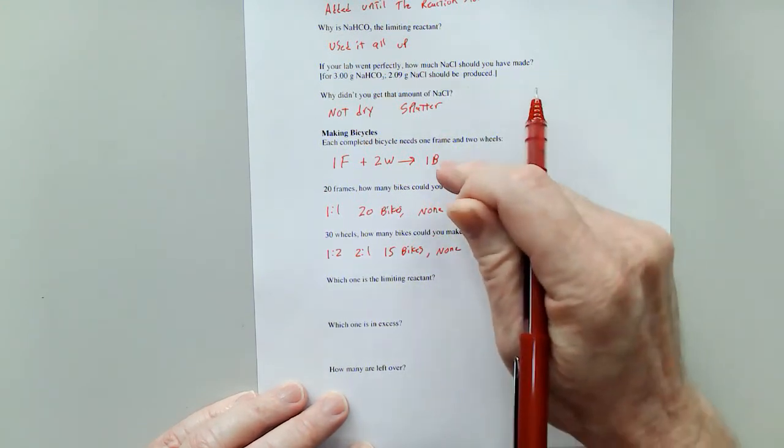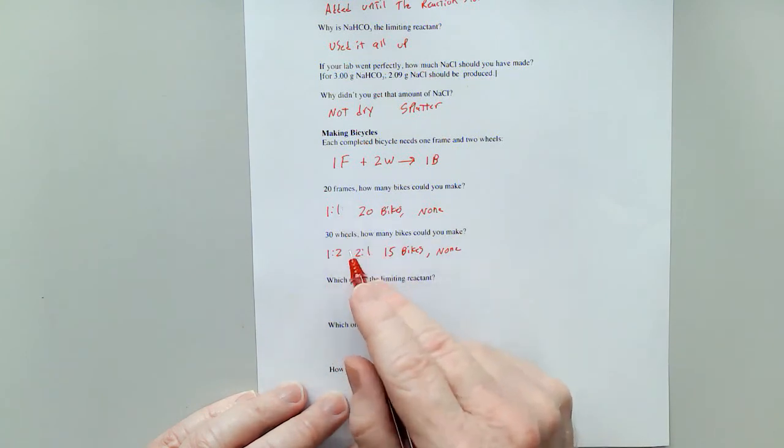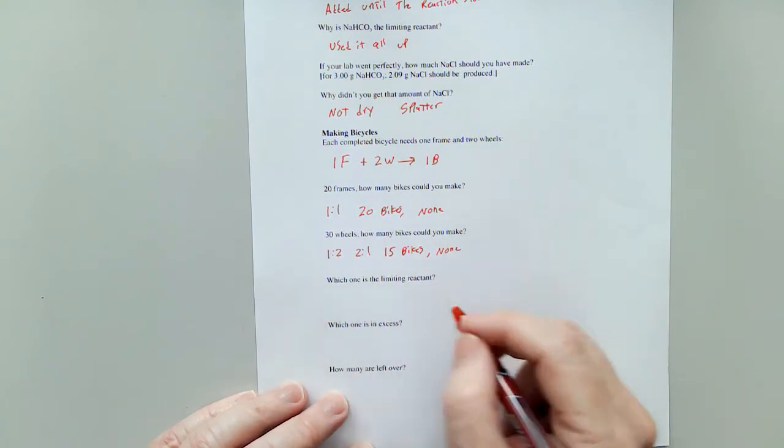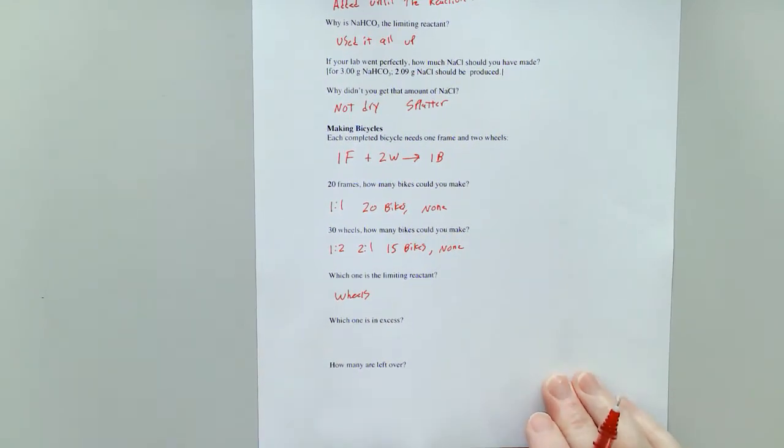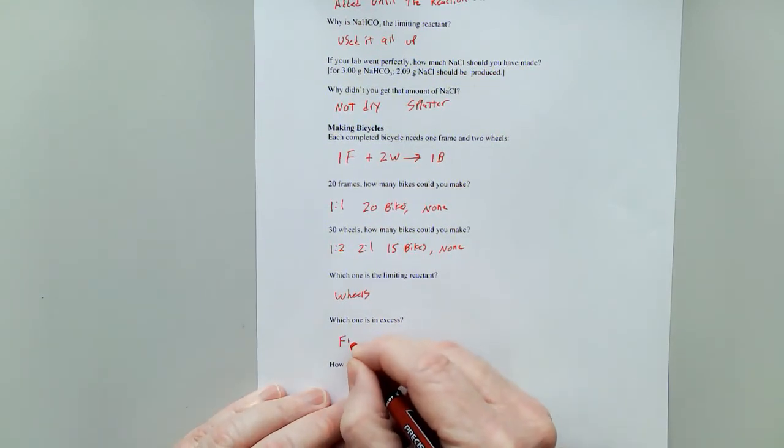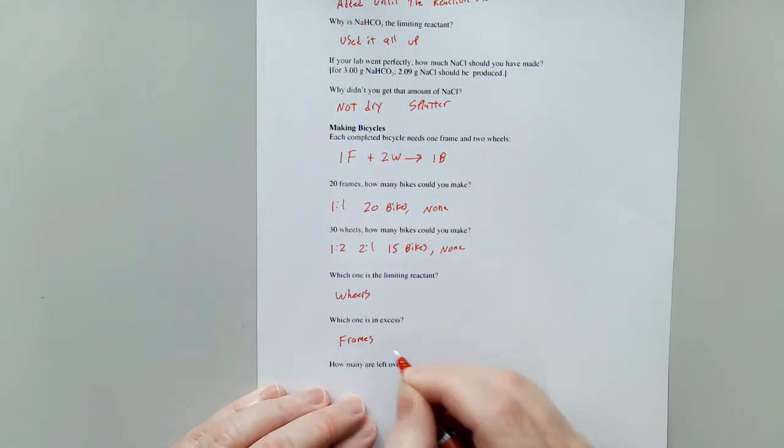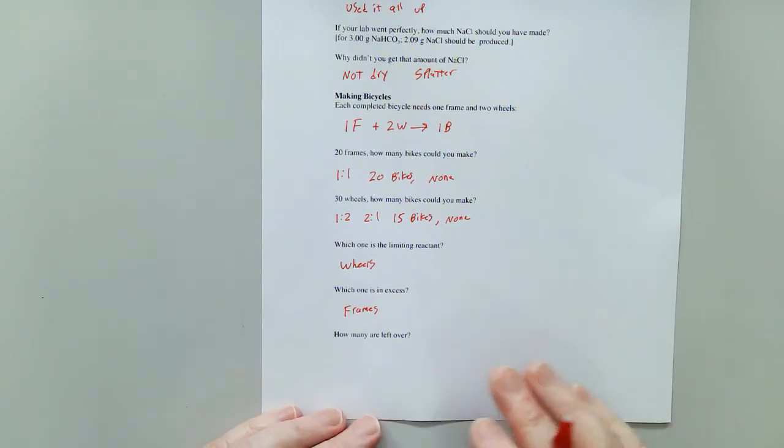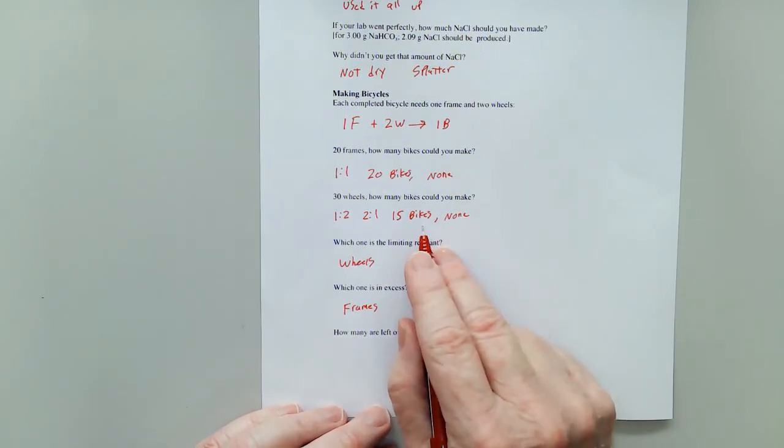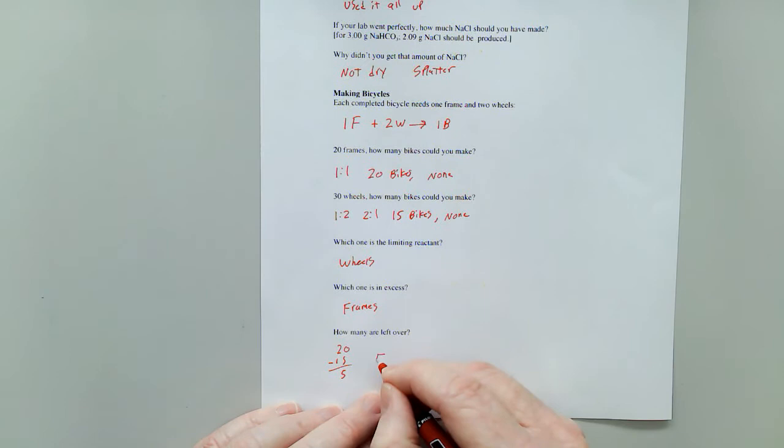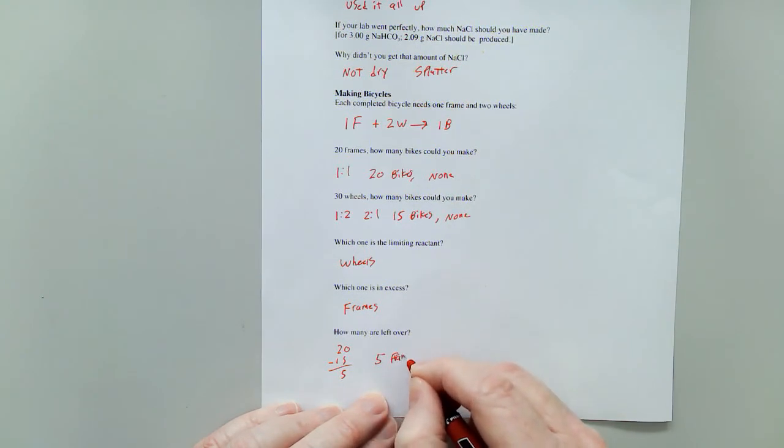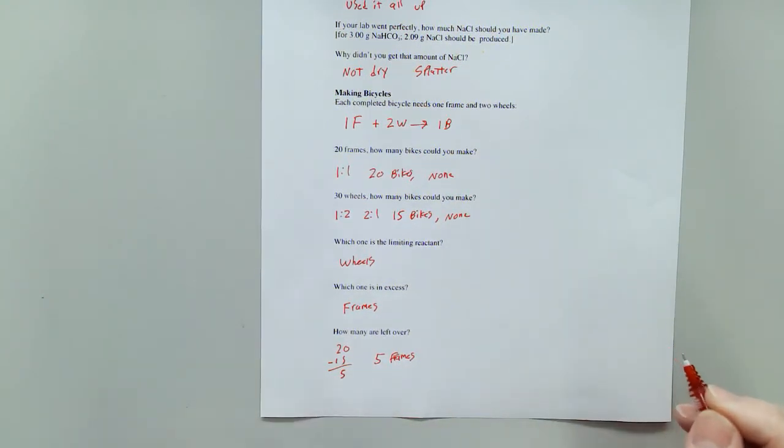So what if I put these two scenarios together? I've got 20 frames, I've got 30 wheels. Which one of these is my limiting reactant? Wheels for sure. Because I've run out of wheels before I am done with all of the frames. So the frames must be the excess reactant. I have extra frames in this process. How many? Well, if I'm making 15 bikes and I have 20 frames, 20 minus 15 is 5, or I have 5 frames left over.